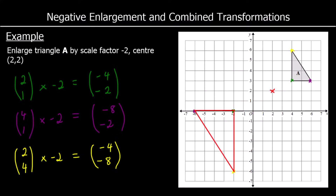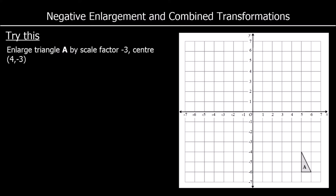So that is my enlarged triangle. Here's another one: enlarge triangle A by a scale factor of negative 3, centre at (4, negative 3). So the centre of enlargement is here, and again we do one point at a time.